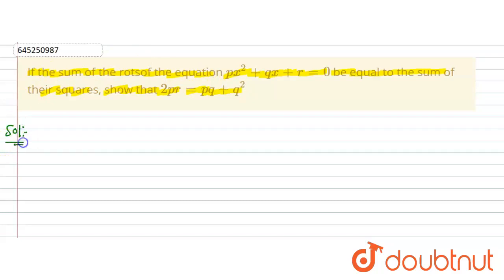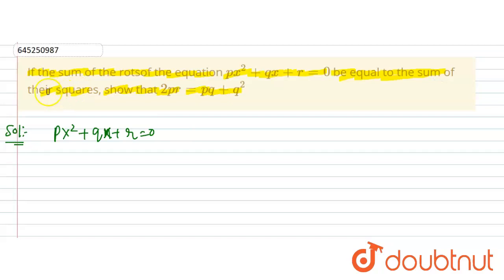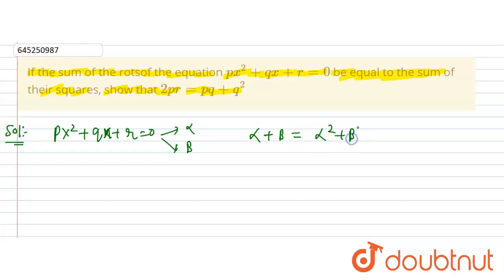The given quadratic equation is px² + qx + r = 0. The condition is that the sum of the roots is equal to the sum of their squares. Suppose the two roots are alpha and beta, so sum of roots alpha + beta = alpha² + beta². We have to prove that 2pr = pq + q².